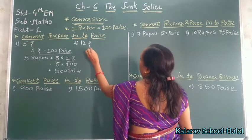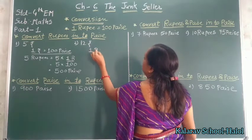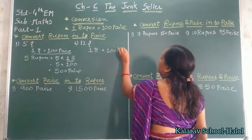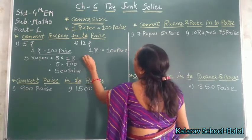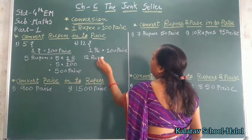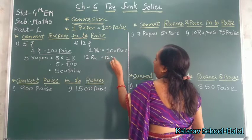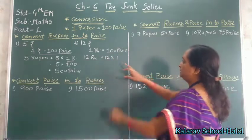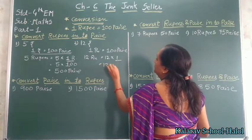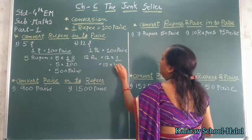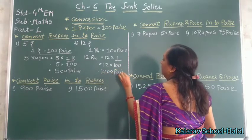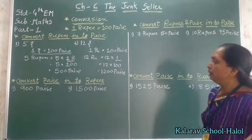Second example: 12 rupees. I write in short: 1 rupee is equal to 100 paisa. So 12 rupees is equal to 12 multiplied by 100, which equals 1200 paisa. Now let's convert paisa into rupees.